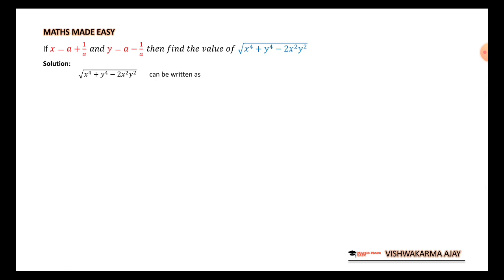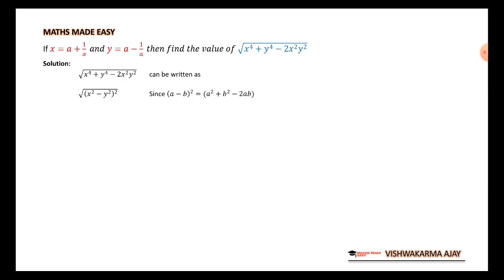Our expression, under root of x raised to 4 plus y raised to 4 minus 2x squared y squared, can be simplified using the formula for a minus b the whole square, which is a squared plus b squared minus 2ab. If you remember this formula, you can see that this expression looks like that pattern, so we can write it as under root of x squared minus y squared, the whole square.